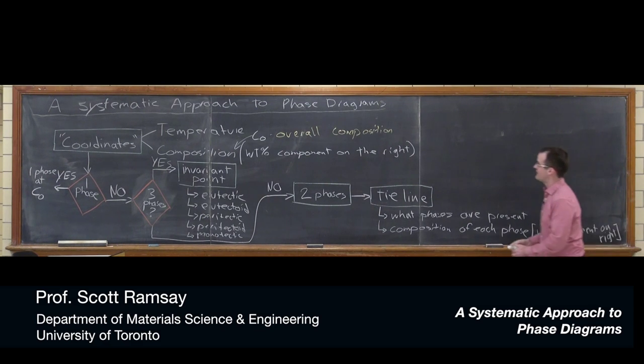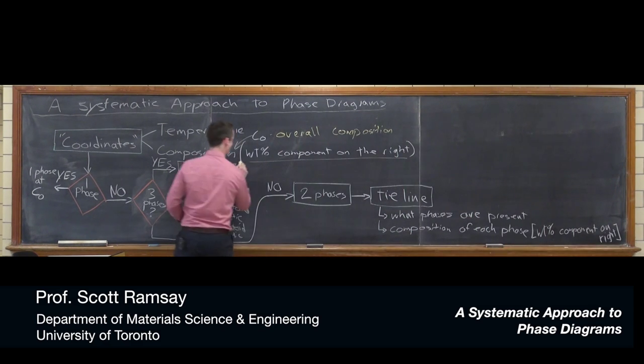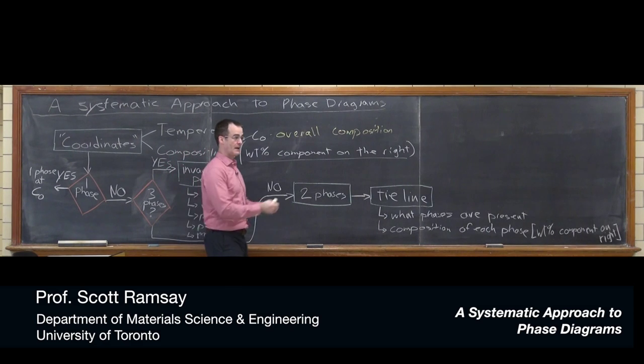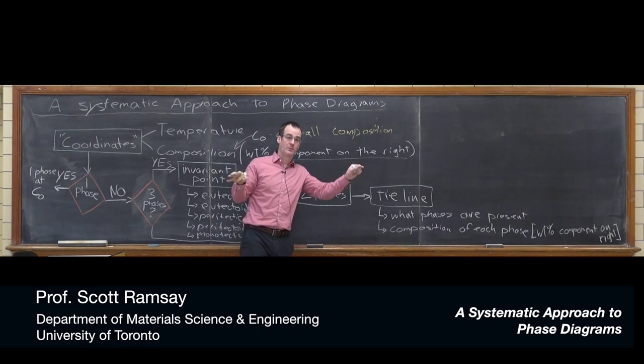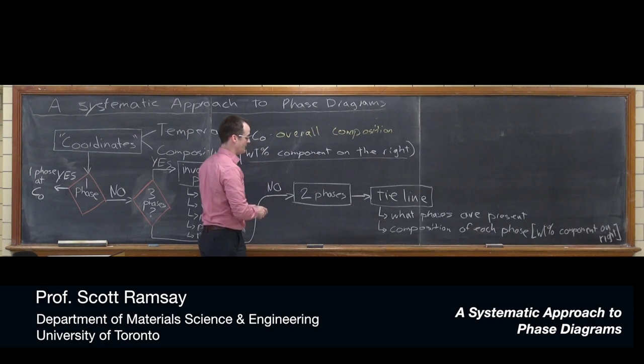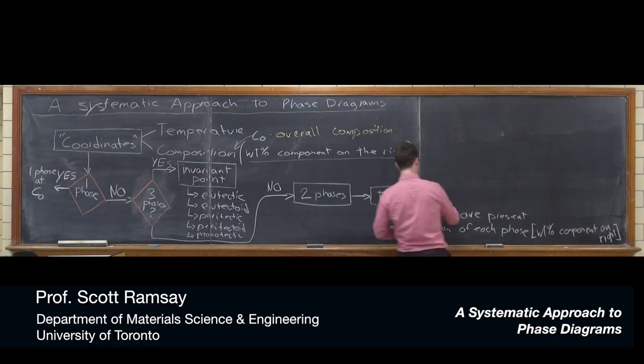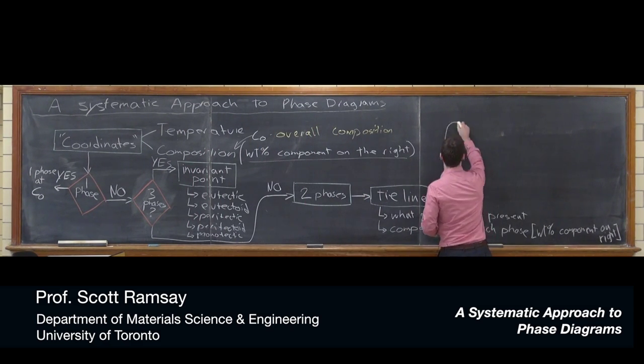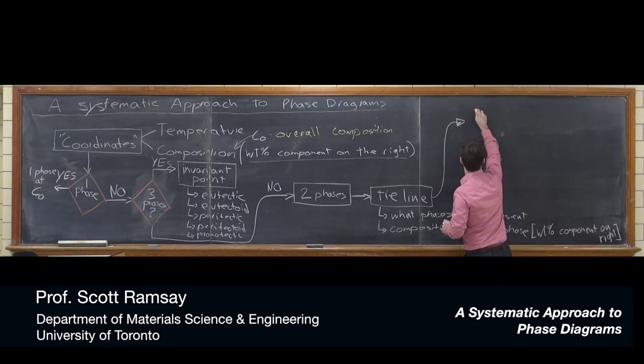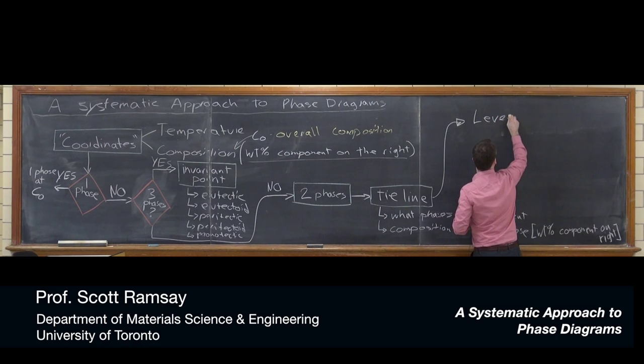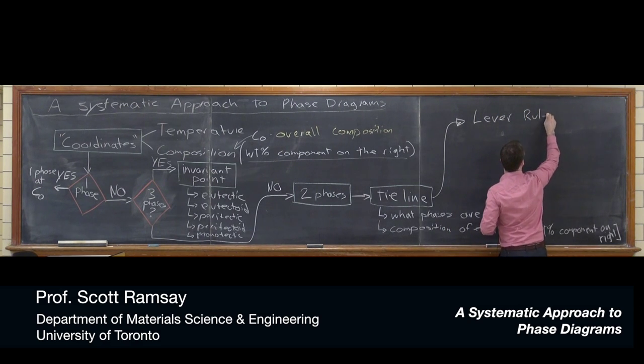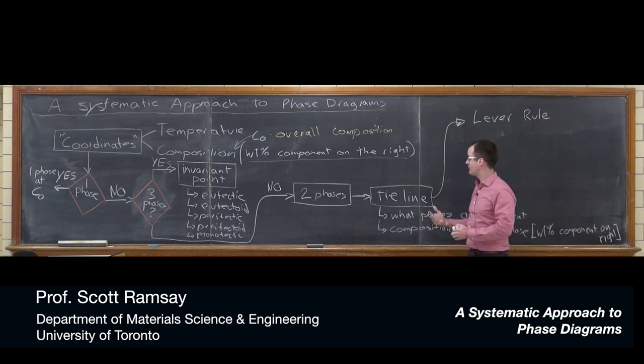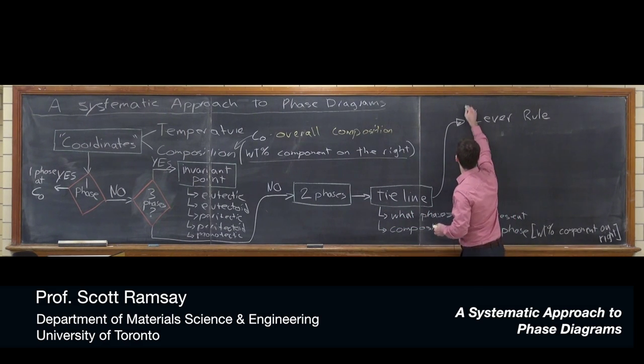Again, composition is in weight percent component on the right. Same units as we had over here. But now there's two phases. One has a certain composition, another has a different composition. And then once you do the tie line, you can then move right into doing a lever rule calculation. And the lever rule will tell us how much of one phase there is and how much of the other phase there is present.